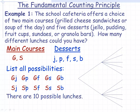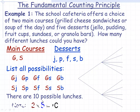So there are ten possible lunches. The way the fundamental counting principle works is that in order to create a lunch here, there are two actions that have to be performed. There are two ways to select the main course, and for each of those two ways, there are five ways to select the dessert. That's why I've arranged this in two rows of five. So two ways to select the main course times five ways to select the dessert gives two times five, or ten possible lunches. This is the fundamental counting principle, and I'll summarize it on the next page.